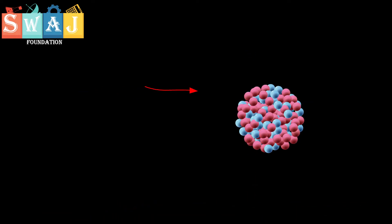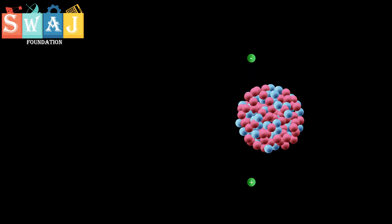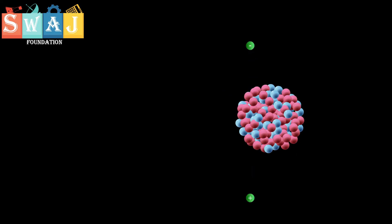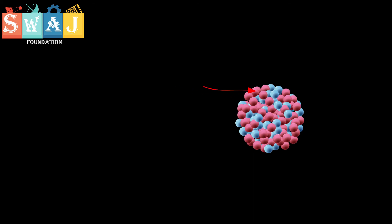A positron is a particle having mass and charge equal to that of an electron, but the charge being of opposite nature. The creation of two particles with equal and opposite charges is essential for charge conservation in the universe.